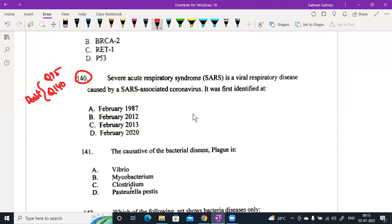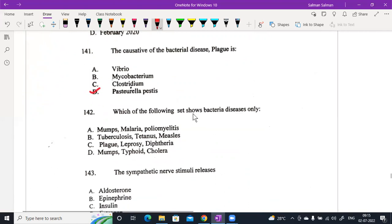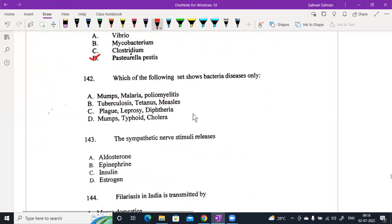The severe acute respiratory syndrome, SARS, is a viral respiratory disease caused by SARS-associated coronavirus. It was first identified - now, look at this exact answer. What is the answer? It is not clear. But we can choose it in February 2003. The causative of the bacterial disease plague is Yersinia pestis. Which of the following sets shows bacterial disease only? Plague, leprosy, syphilis.